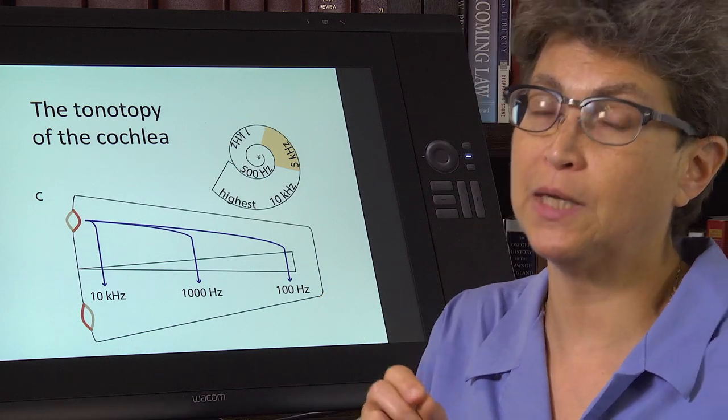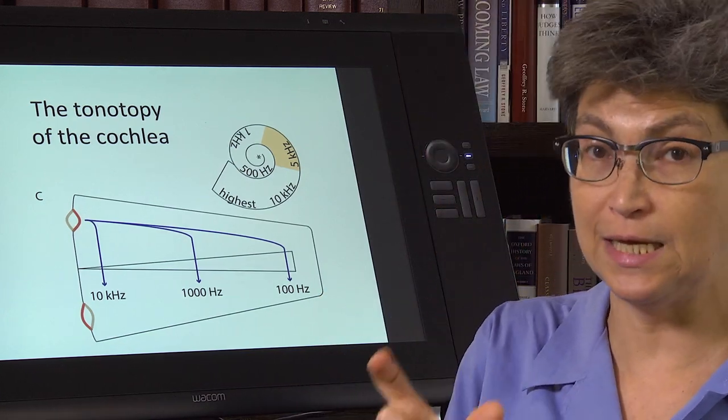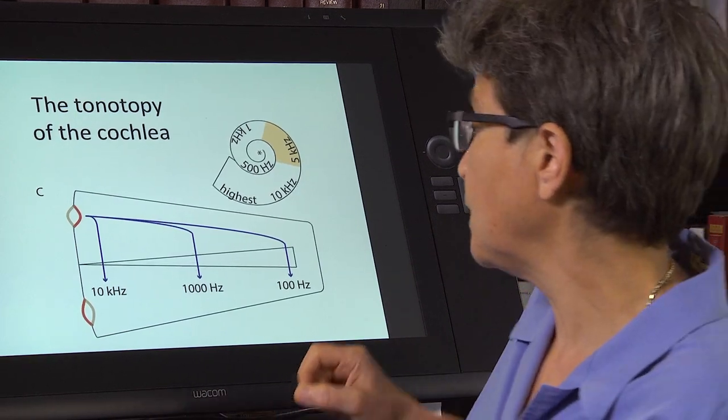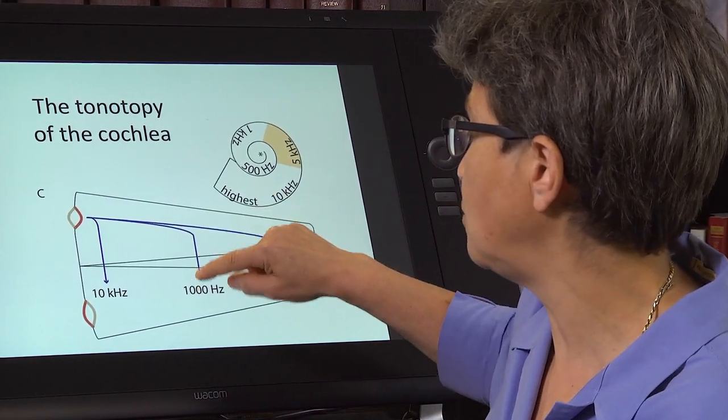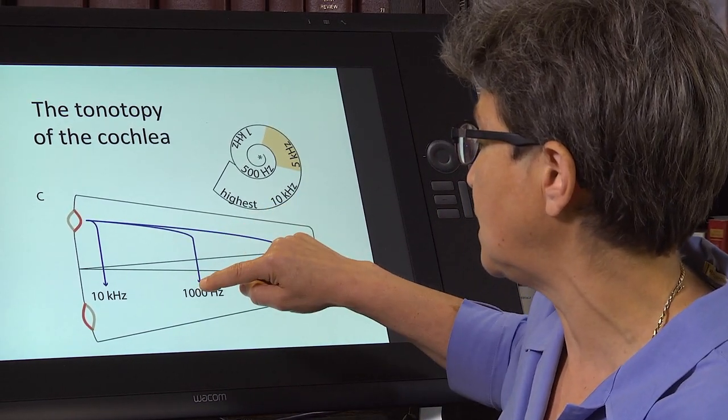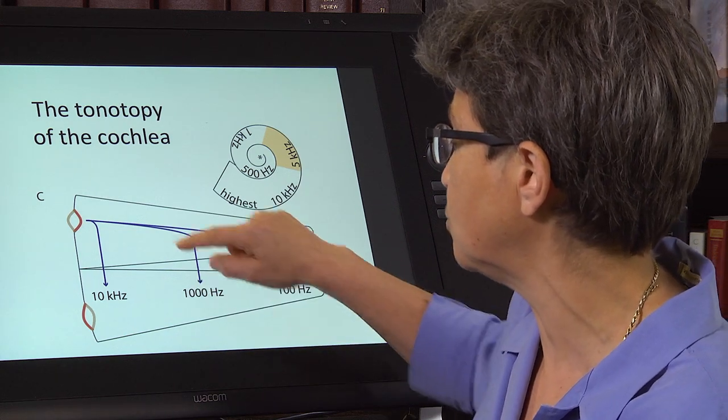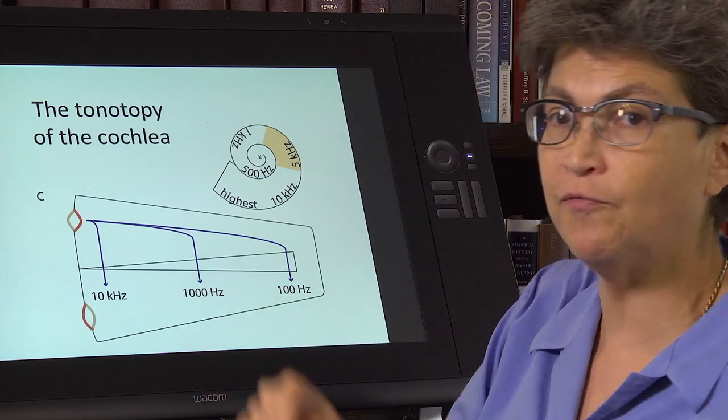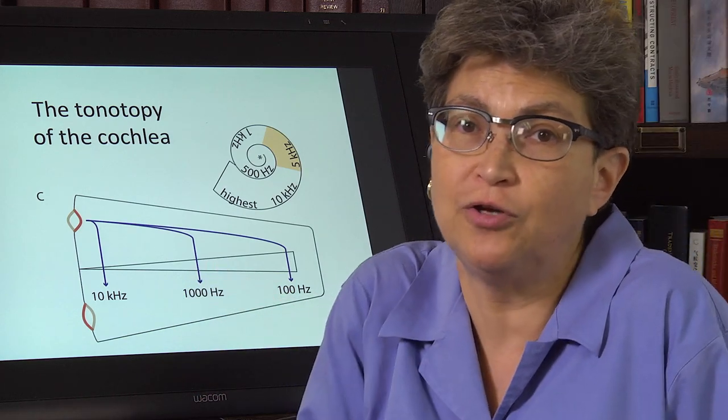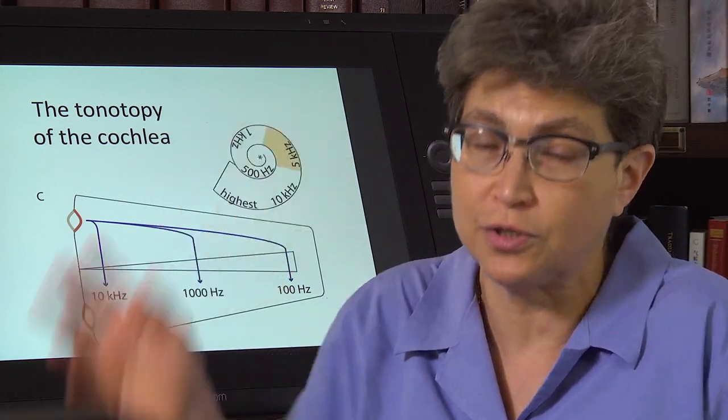According to von Békésy's findings in the dead cochlea, you would be able to tell the difference between, say, 1 kilohertz and 100 hertz, or 1 kilohertz and 5 kilohertz. But, in fact, we can tell the difference between 500 hertz and 502 hertz.